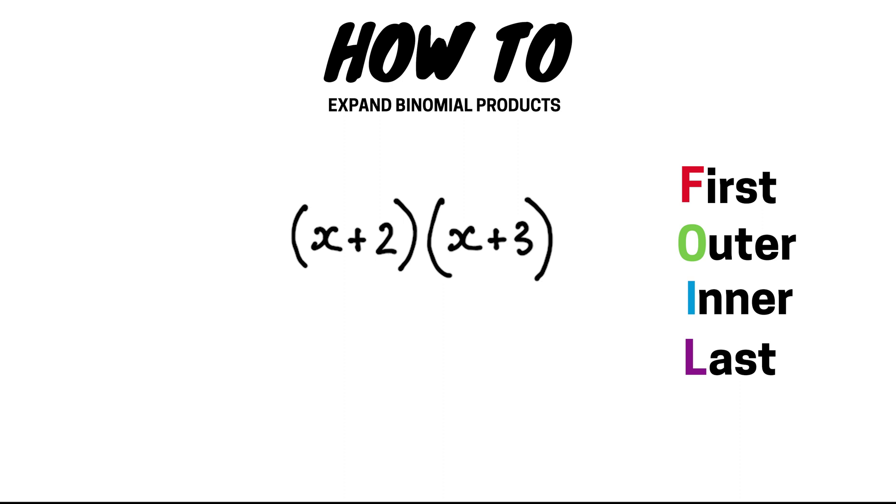So our first step is to multiply together the first term in both the brackets, so x times x which gives us x squared. We then multiply together the outside term in each bracket, so x times 3 gives us 3x. Next we multiply together the inner terms, 2 times x is equal to 2x. And finally we multiply together the last term in each bracket, 3 times 2 is 6.